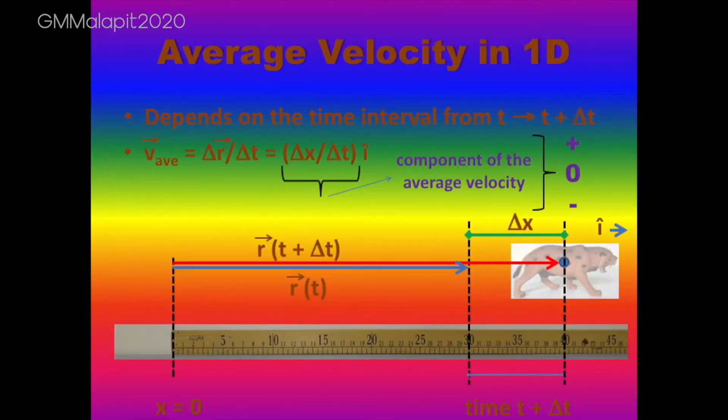The average velocity in one dimension is equal to the component of the average velocity, delta x over delta t, i hat.